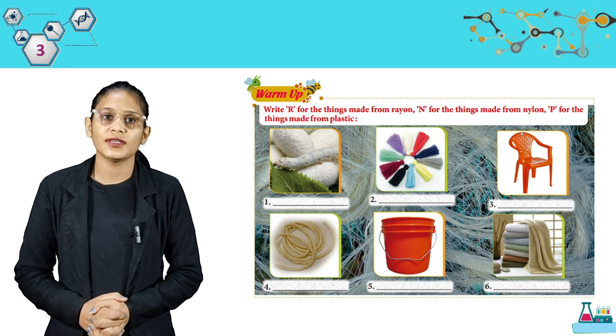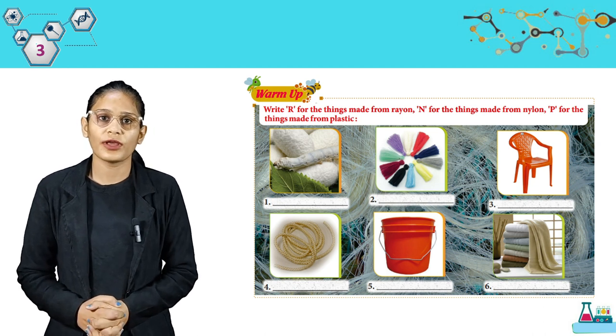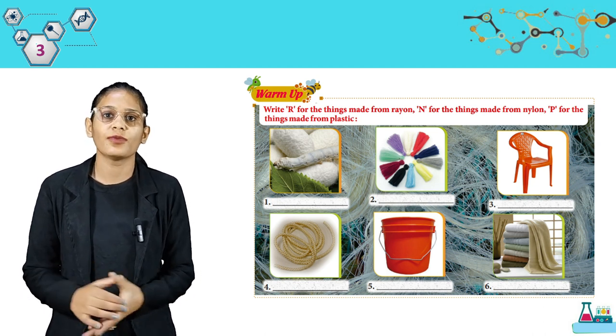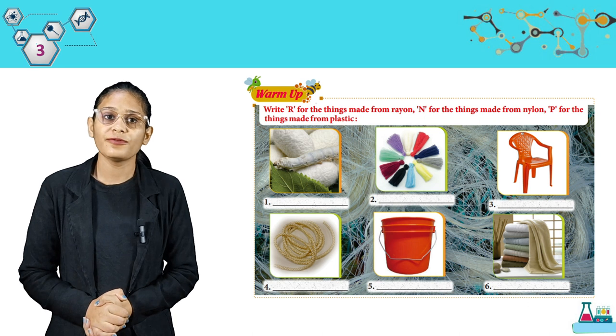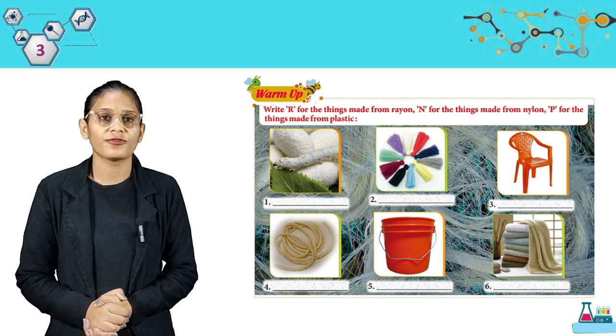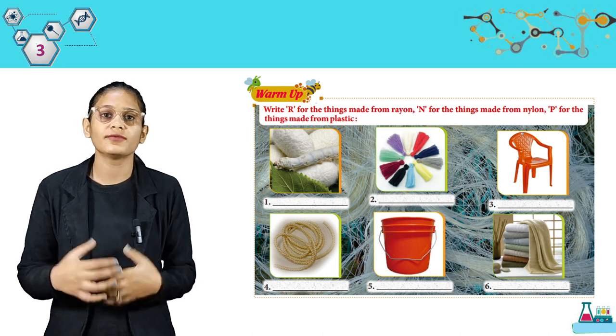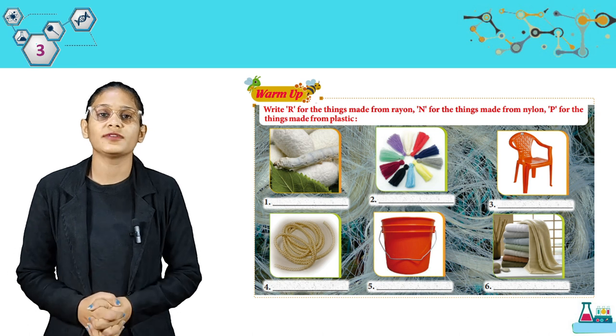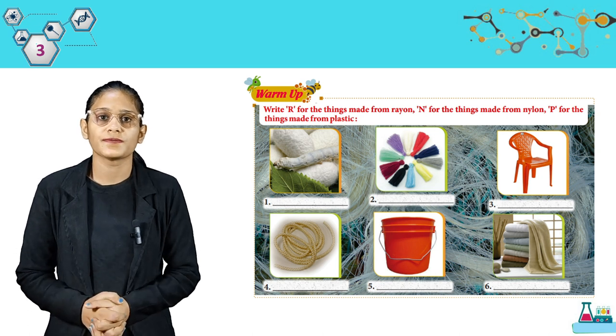Write R for the things made from rayon, N for the things made from nylon, T for the things made from plastic. So students, here you have to look at these pictures and write the name of their fibers.